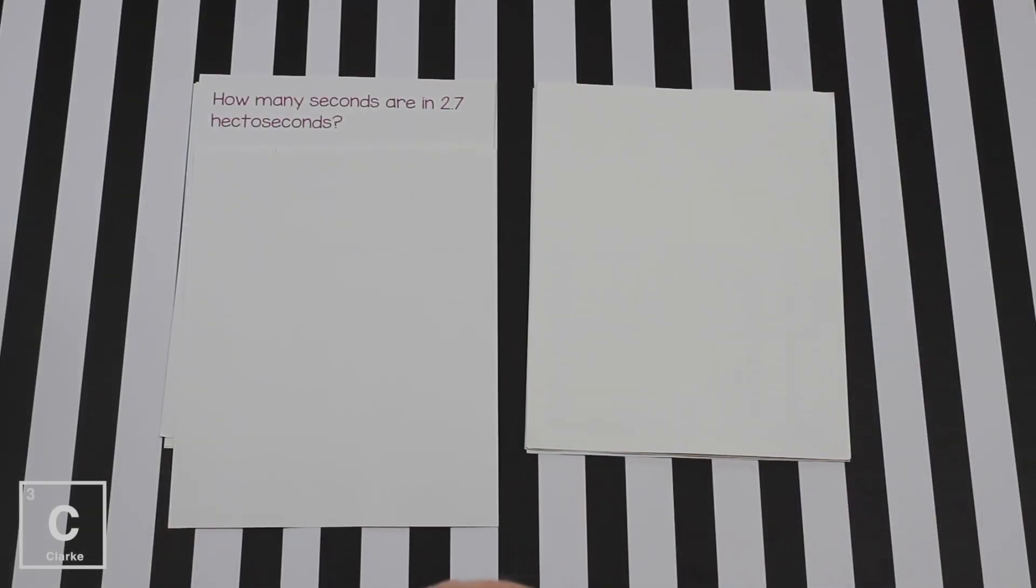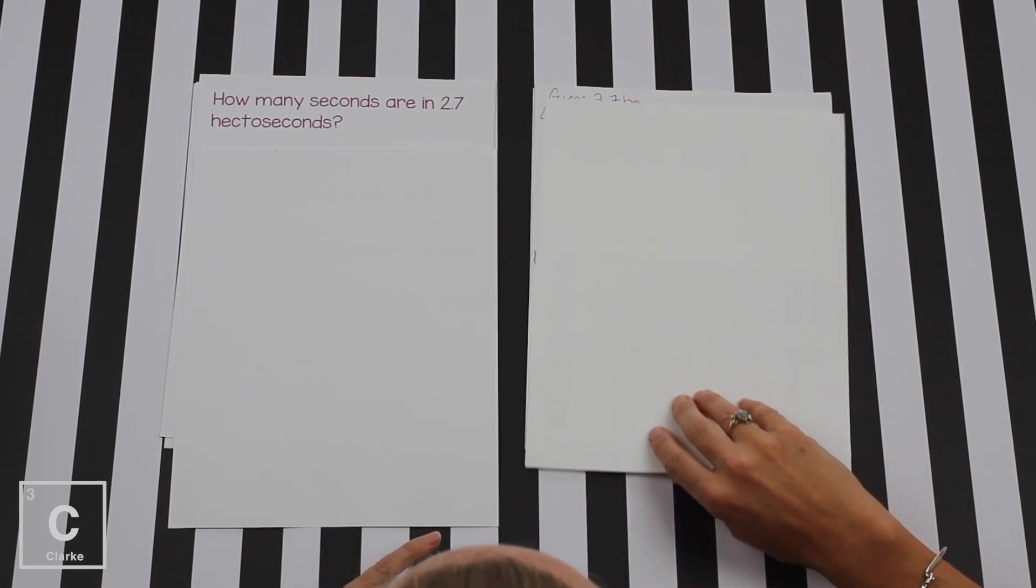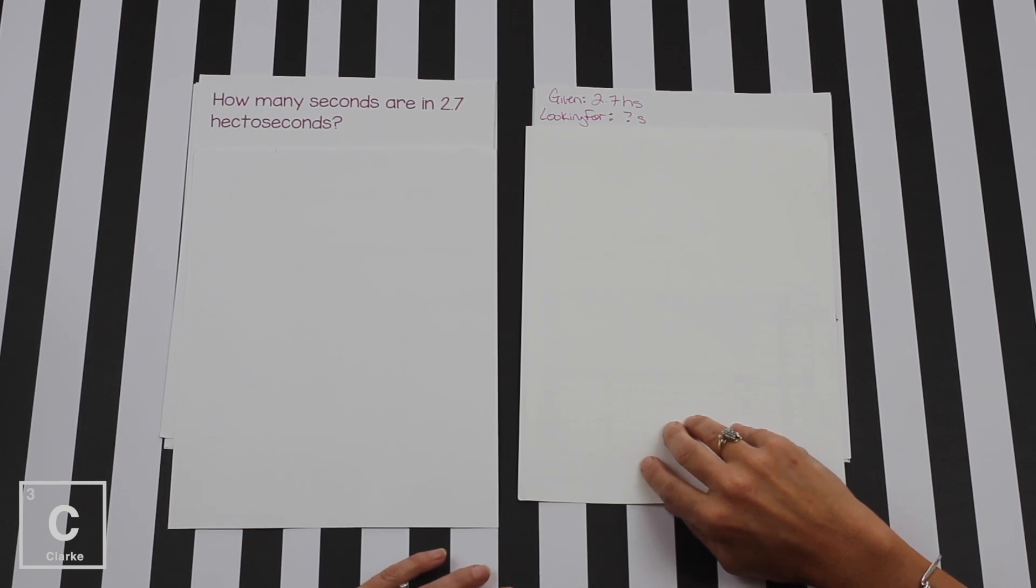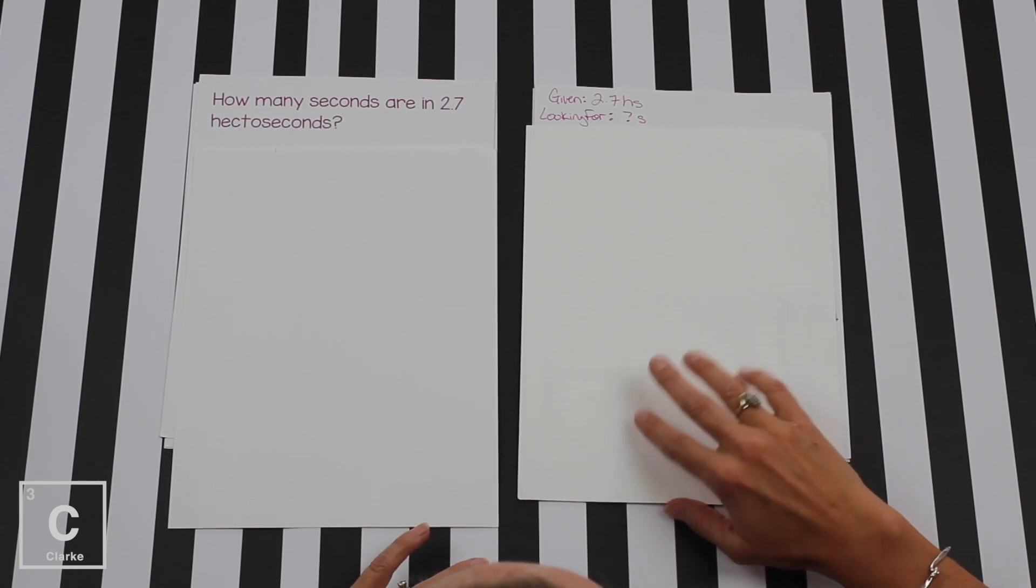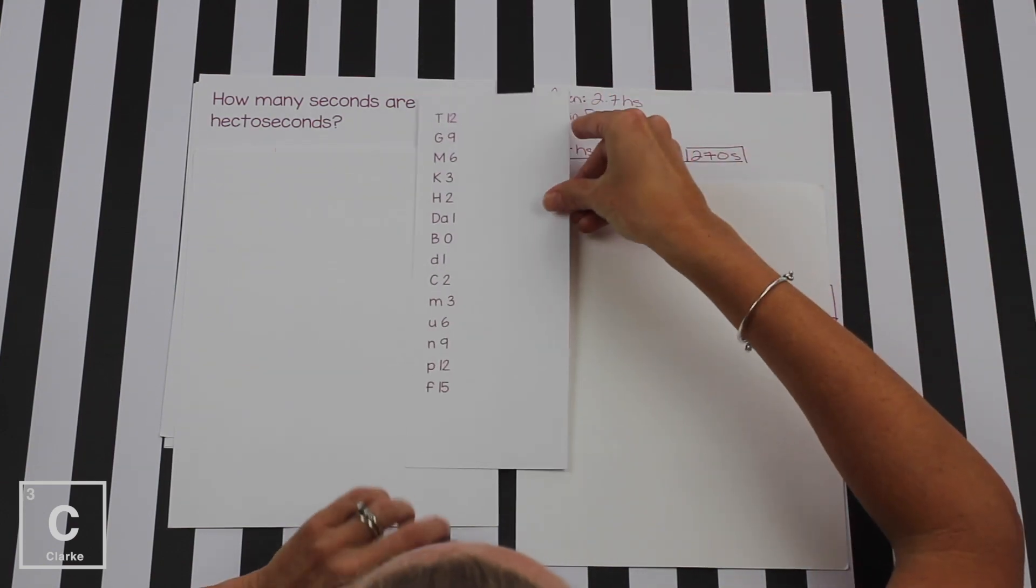So how many seconds are in 2.7 hectoseconds? We're going to combine everything we've been talking about. We're going to write that given information. We've got 2.7 hectoseconds and we're looking for seconds. Remember, copy this down on your paper. I suggest making this on every page. If you rewrite this like three or four times while you're doing your homework, guess what? Memorized and you didn't even try to memorize it.